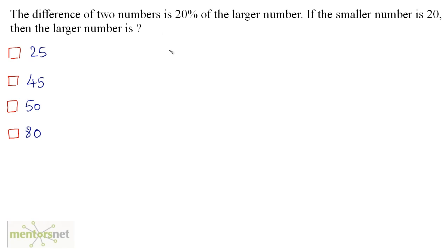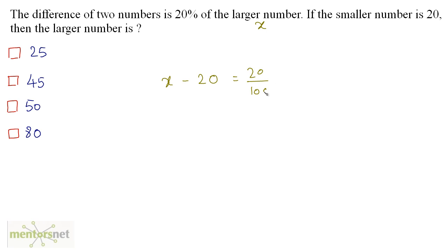The difference of 2 numbers is 20% of the larger number. If the smaller number is 20, then what is the larger number? Let the larger number be x. The difference of these two numbers is 20 percent of the larger number.